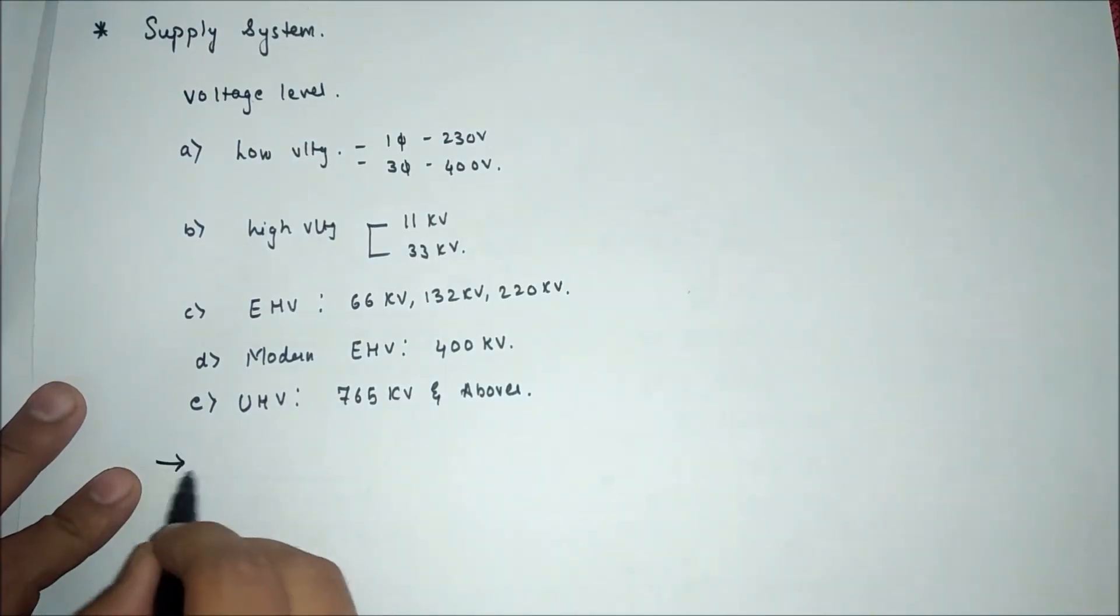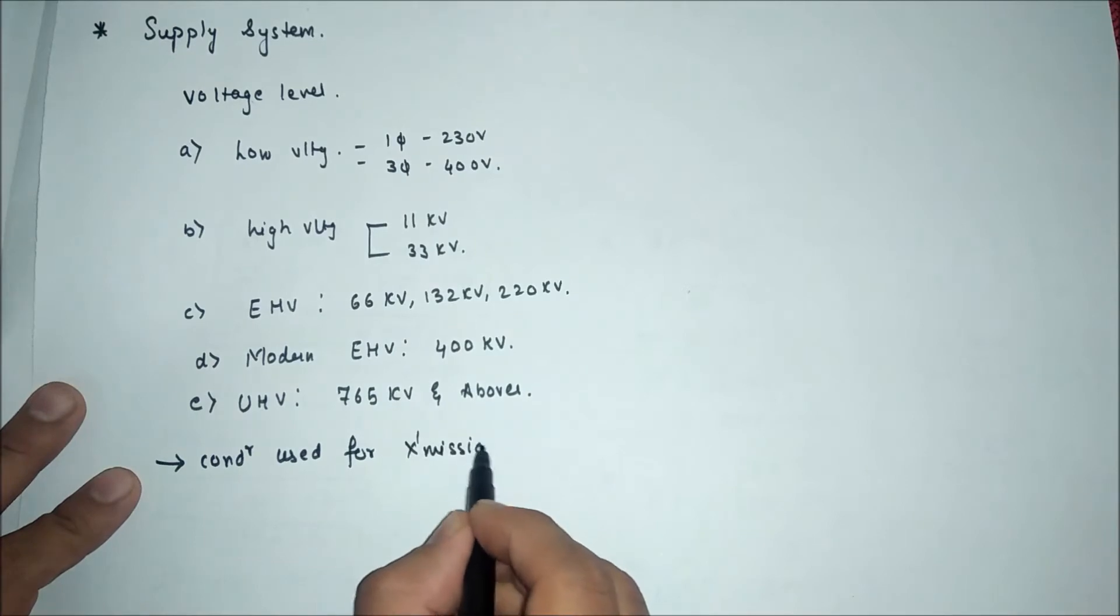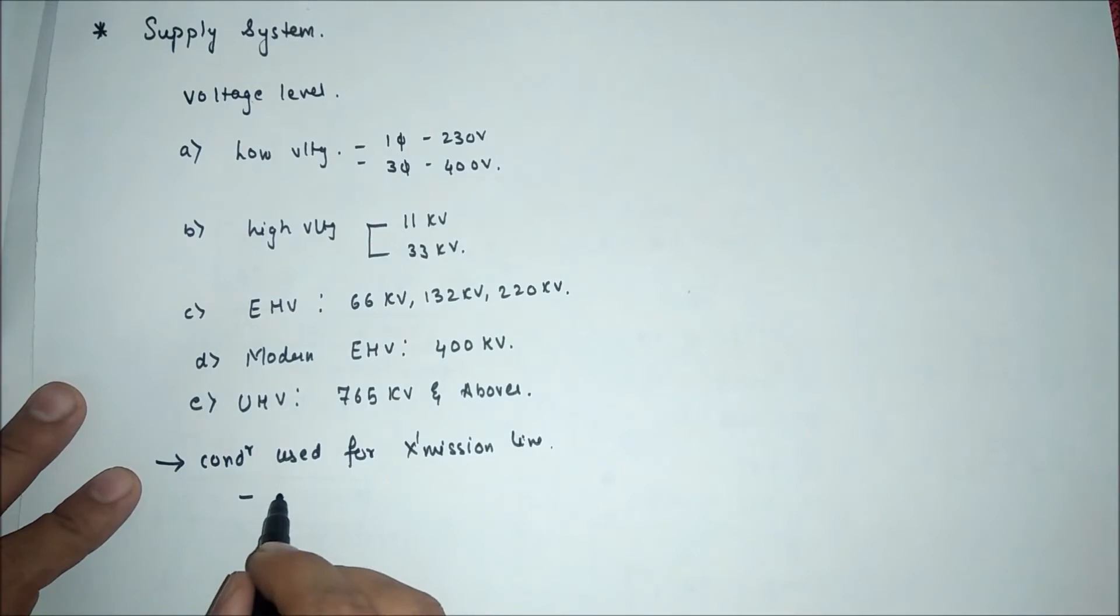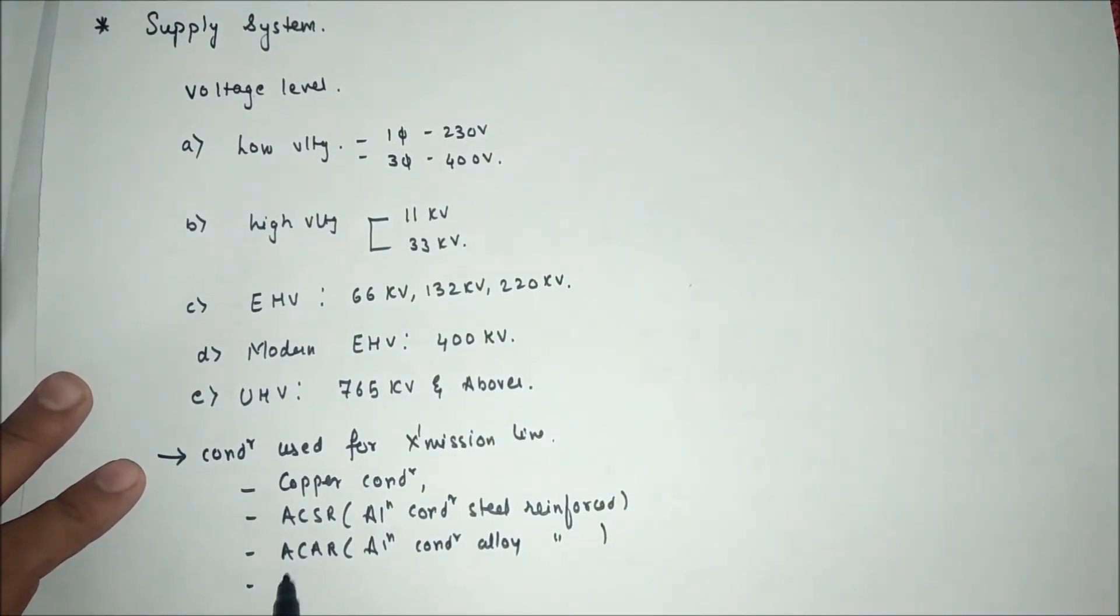We will see the conductor used in transmission line. In transmission line, we can use copper conductor. Second one is ACSR which is known as aluminum conductor steel reinforced. Third one is ACAR which is aluminum conductor alloy reinforced. Fourth one is AAAC which is known as aluminum alloy conductor. Mainly ACSR conductor is mostly used in transmission line.